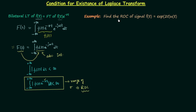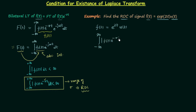In this example we need to find the region of convergence of signal F(t) = e^(2t)·u(t). We will use the existence condition, so we calculate the integral from minus infinity to infinity of |F(t)·e^(-σt)| dt. This equals the integral from minus infinity to infinity of |e^(2t)·u(t)·e^(-σt)| dt. Because of u(t), the range of integration changes to 0 to infinity.